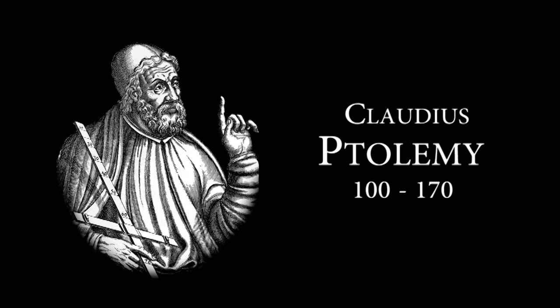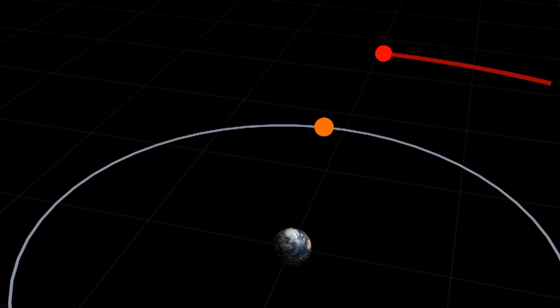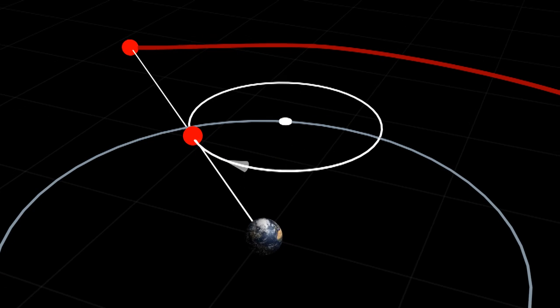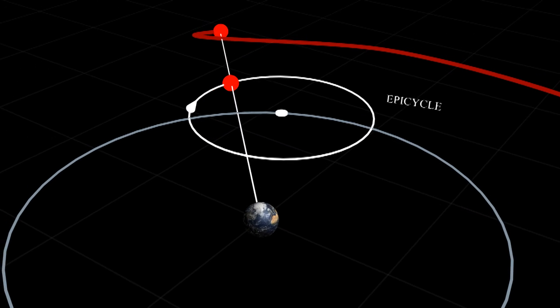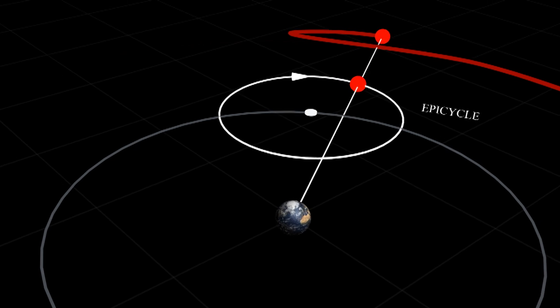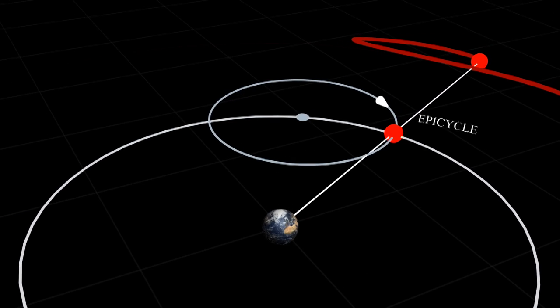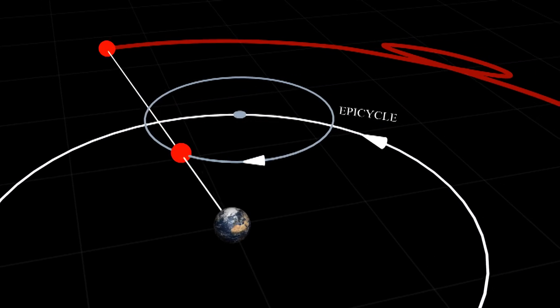Ptolemy realized that he could explain this behavior by adding a second circle called an epicycle. Each planet orbits around an epicycle and the epicycle orbits around the Earth.